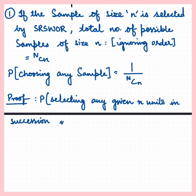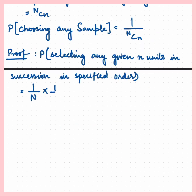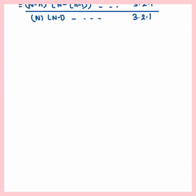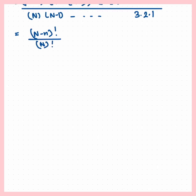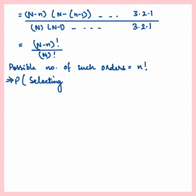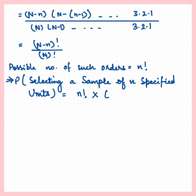We shall prove this. The probability of selecting any given n units in succession in a specific order is 1/N × 1/(N−1) × ... × 1/(N−n+1). Upon simplification we get (N−n)! / N!. The total number of such orderings is n factorial. Hence the probability of selecting a sample of n specified units is (N−n)! / N!, summed n! times, which equals 1 / (N choose n).